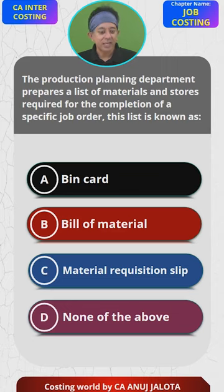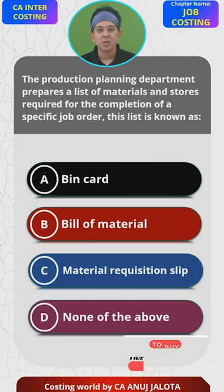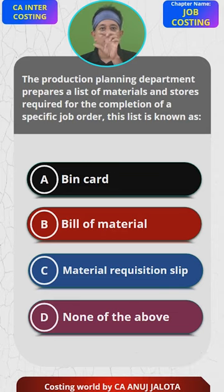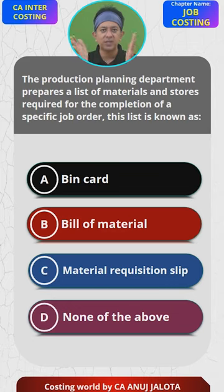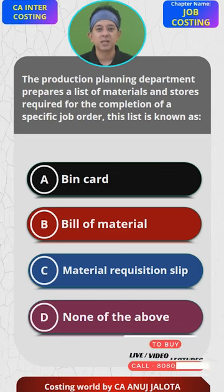Now, what are all these things? Bin card is in the stores department whereby goods are kept on racks. On every rack a specific type of material is kept. The stores department is basically a warehouse where raw material is kept. Against each and every rack there is a card that hangs — that is called a bin card.